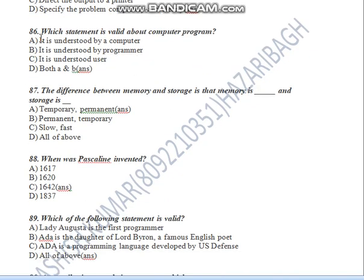Question Number 86: Which statement is valid about a computer program? It is understood by the computer, it is understood by the program, it is understood by the user. So the answer is D — both A and B.